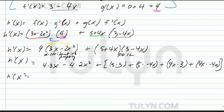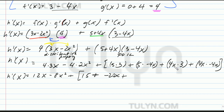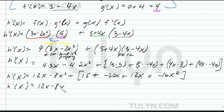So h prime of x equals: 4 times 3x is 12x, negative 4 times 2x squared is negative 8x squared. Plus 5 times 3 is 15, plus 5 times negative 4x is negative 20x, plus 4x times 3 is 12x, plus 4x times negative 4x is negative 16x squared. Then combine like terms: 12x minus 8x squared plus 15 minus 20x plus 12x minus 16x squared.